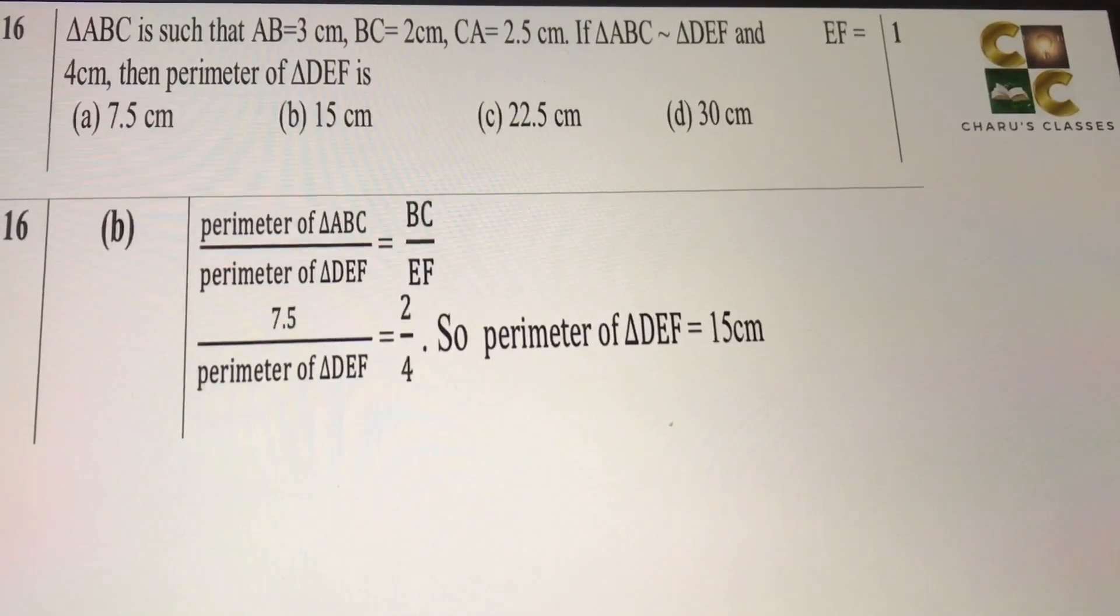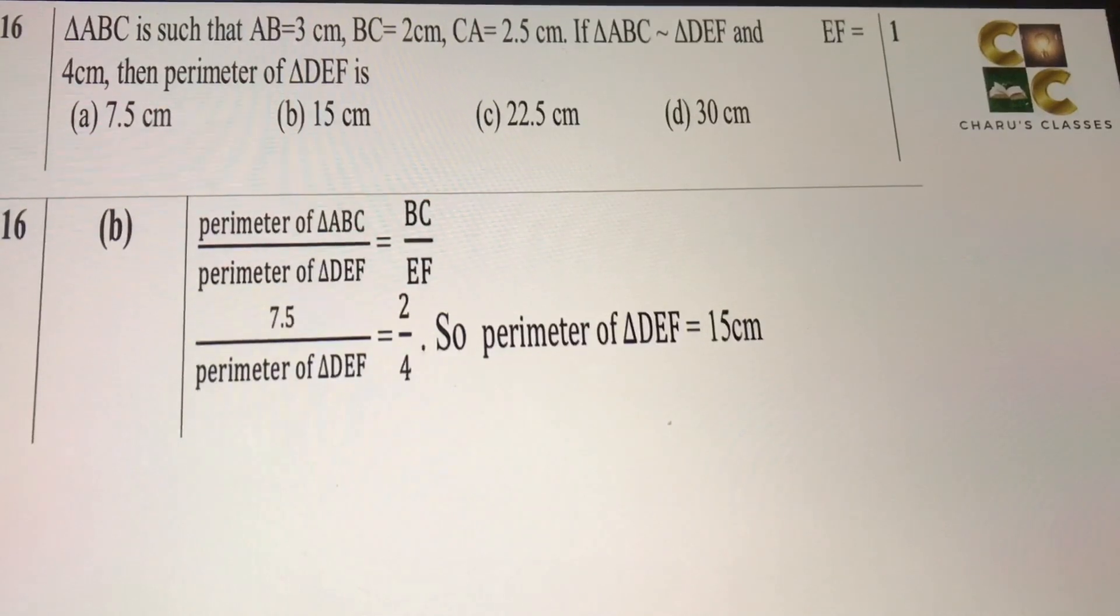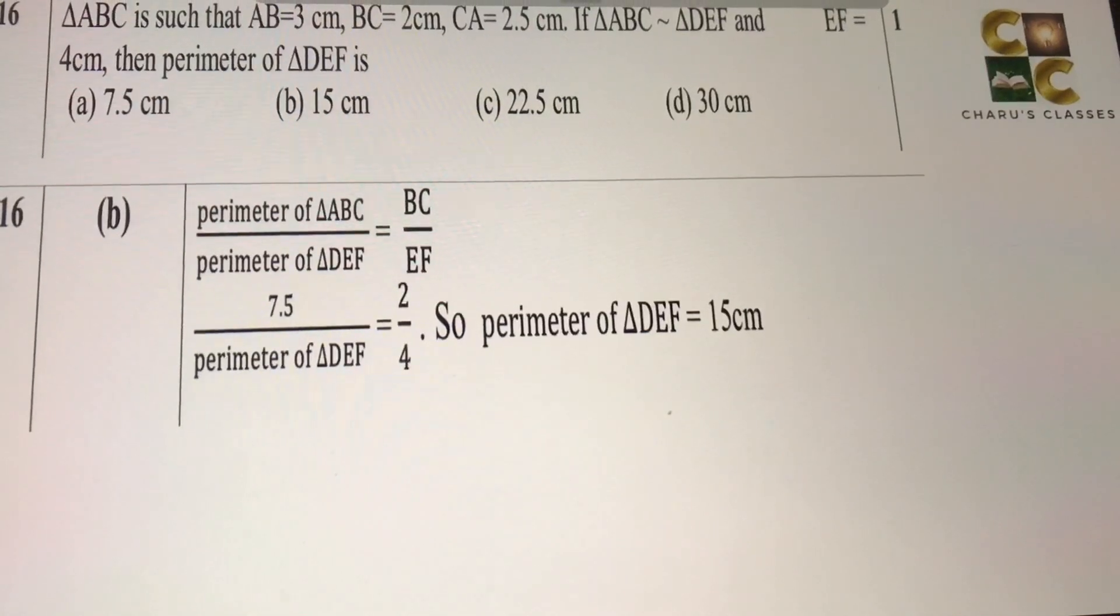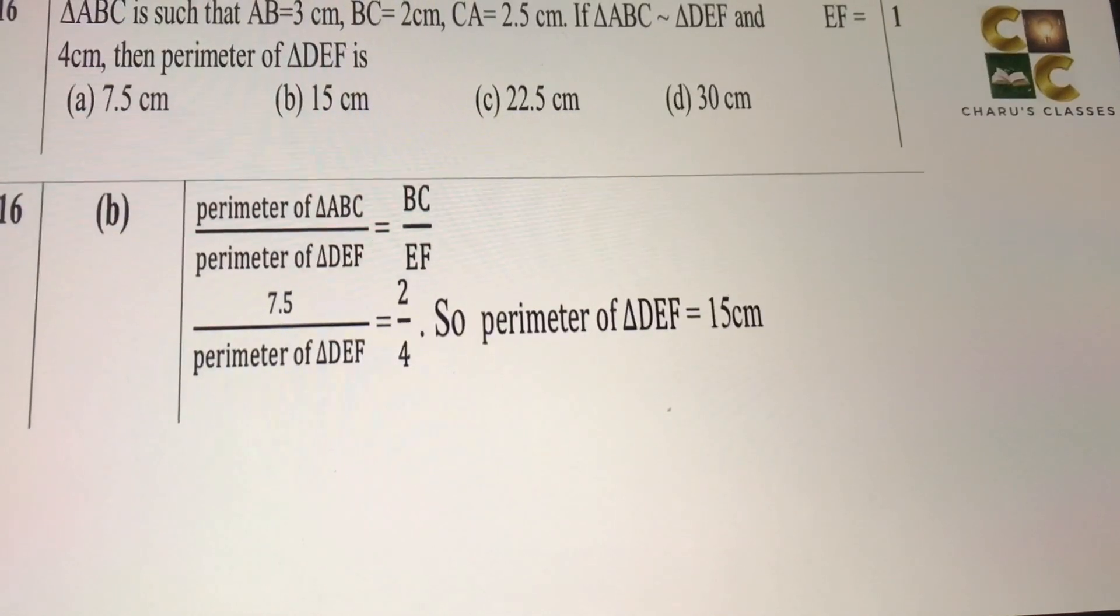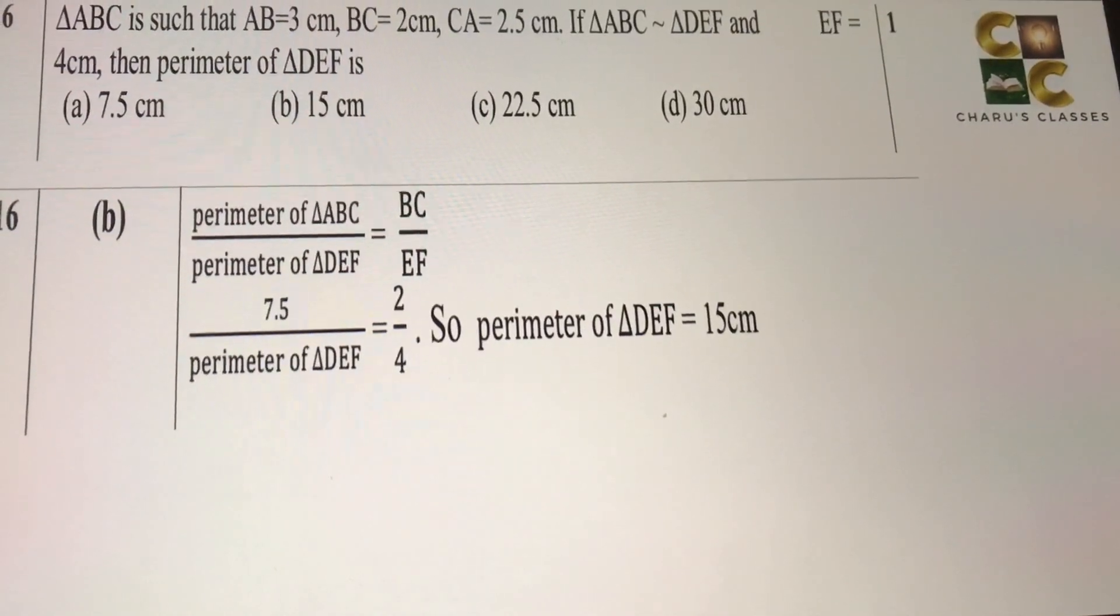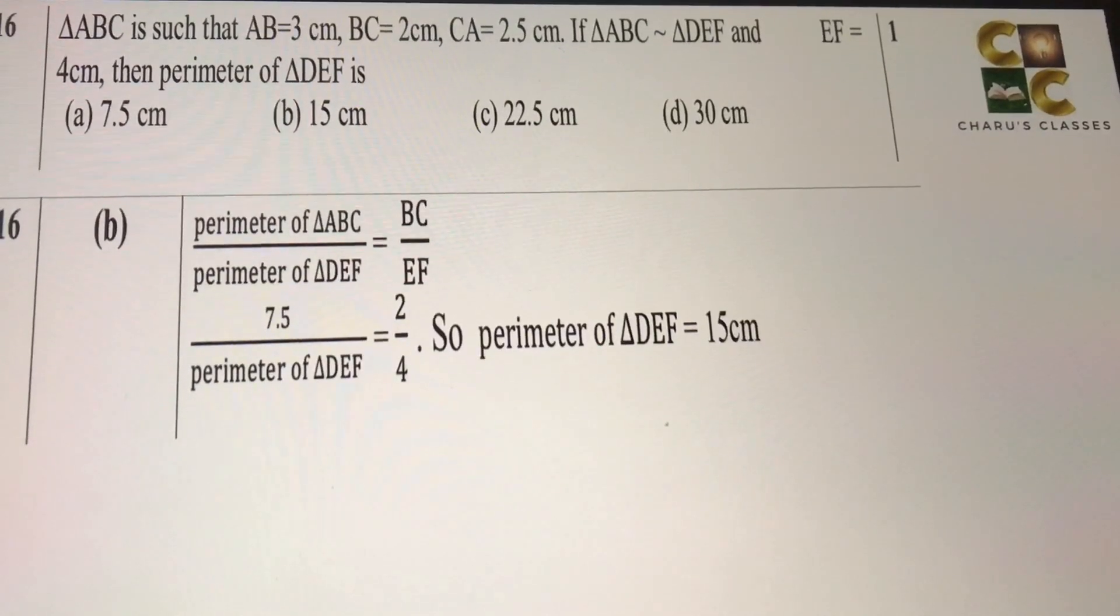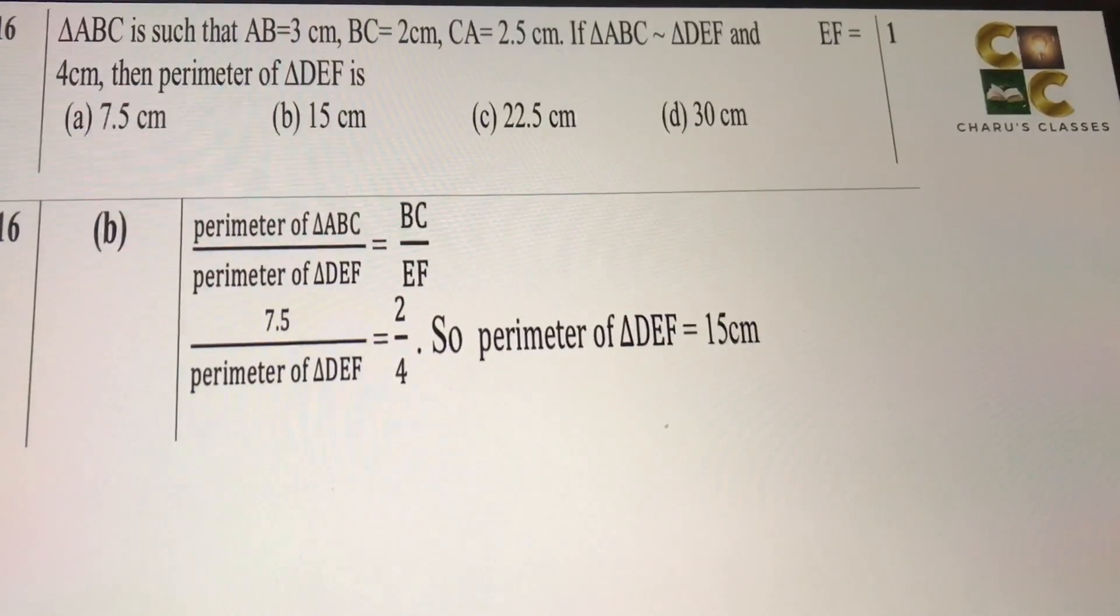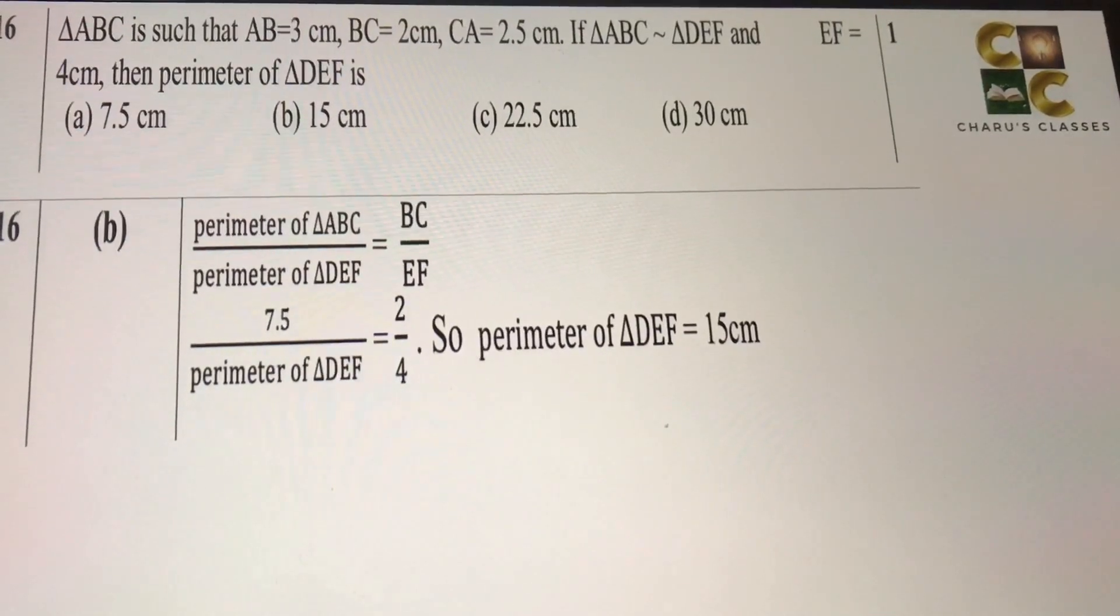16th: triangle ABC is such that AB is 3 cm, BC is 2 cm, CA is 2.5 cm. If both triangles are similar, ABC is similar to DEF, and EF is 4 cm, then the perimeter of DEF is. We know when two triangles are similar, then the perimeter ratio is equal to the corresponding sides ratio. So in this case, we are just going to put the values. Perimeter of ABC is 7.5 by perimeter of DEF is equal to 2 by 4. Solving it will give us 15 cm.